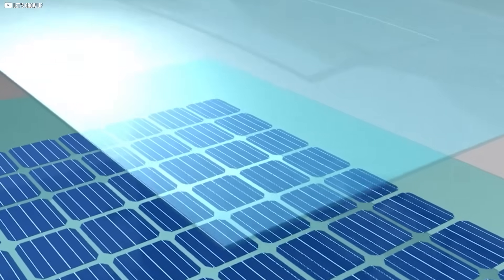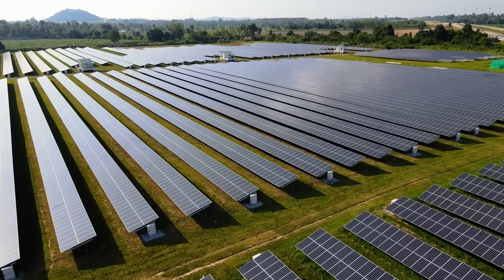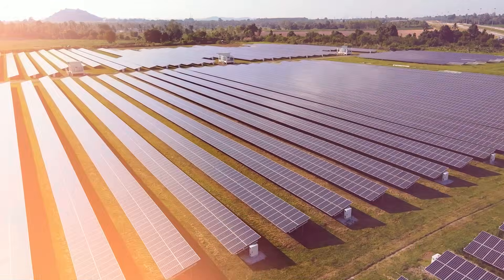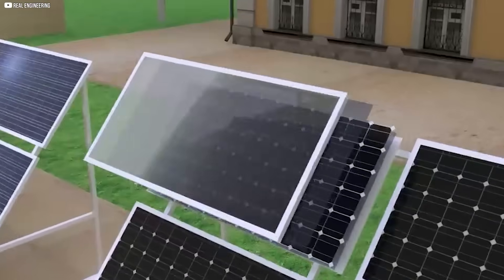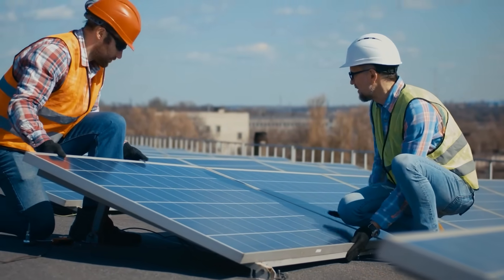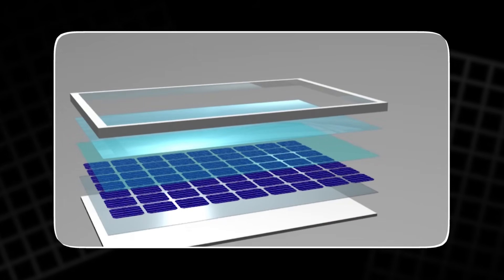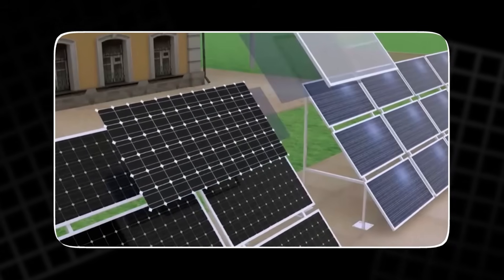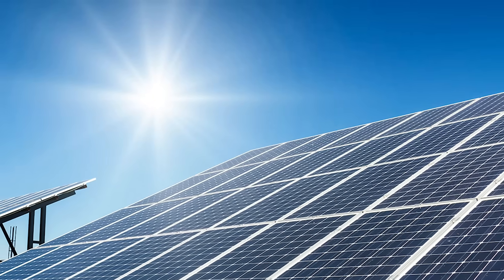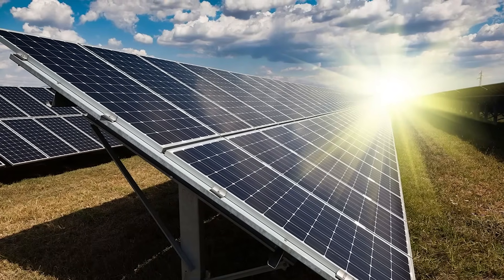Over that sits a sheet of tempered glass. This isn't ordinary window glass. It's tough, designed to withstand hail, rain, and years of sun exposure without cracking or clouding. Finally, an aluminum frame surrounds the entire unit, giving it rigidity and making installation easier. Each of these components plays a role. Together, they protect the fragile silicon cells inside, while allowing as much light as possible to pass through and reach the surface where energy conversion begins.